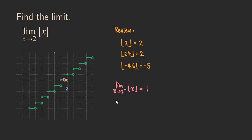On the other hand, if you are approaching 2 from the right side, then let's just draw some arrows right here. Then the function will be approaching 2. So we get 2 here.